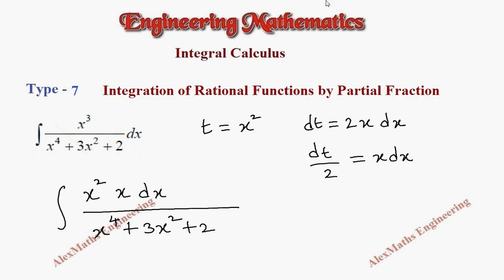Now the entire numerator can be replaced as, that is x square into x dx is replaced as t into dt by 2. So we can replace this as integral t then dt by 2 whole divided by t square plus 3t plus 2.